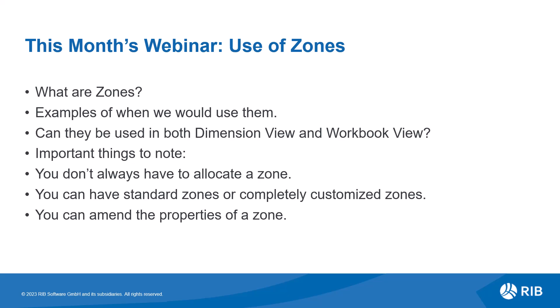An example of when we would use zones would be if you have to measure the interior fit-out of a building and want to divide it up into different finishes. You might have areas requiring hard flooring and others carpeted, or rooms which are tiled and others not, so you can use zones to allocate where these costs and measurements go. You can allocate your measures to zones in the dimension view and then pull the information into the workbook based on the zone you have chosen.